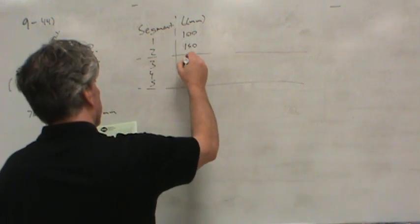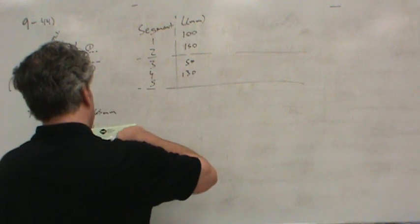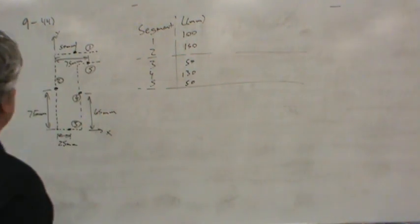50, 130. It's supposed to be 5, 130, and then finally the final length for segment five is 50 millimeters, because we've got 100 millimeters from end to end for segment one.